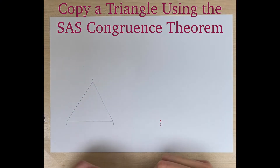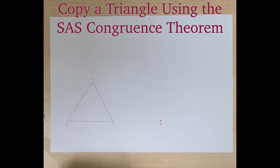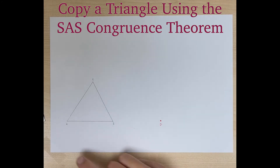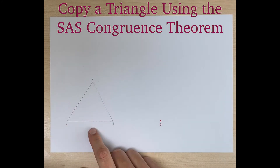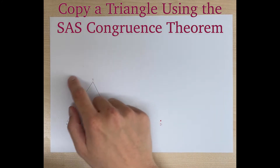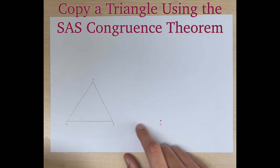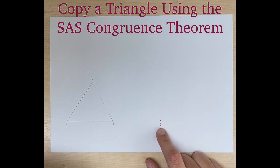Hello everyone, in this construction video we are going to copy a triangle using the side angle side congruence theorem. Here's our setup: we have triangle ABC, and this is the triangle that we want to copy. We're going to start with just a vertex D.